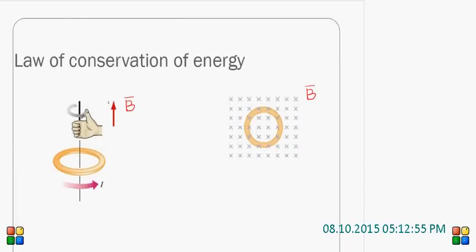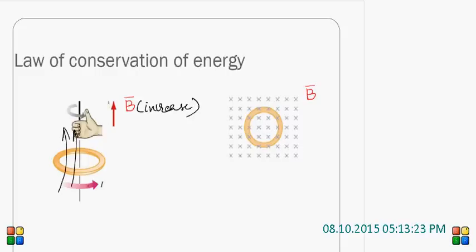For example, to explain it using the law of conservation of energy — take a coil, a closed loop, a ring. Let us suppose that a magnetic field is acting in the direction along the y-axis, and let us suppose that the magnetic field is increasing. If you increase the magnetic field, the flux inside this coil also increases — the flux lines inside also increase.